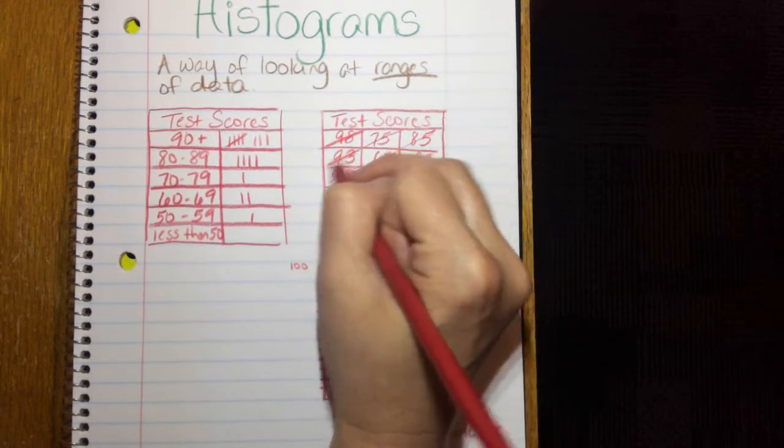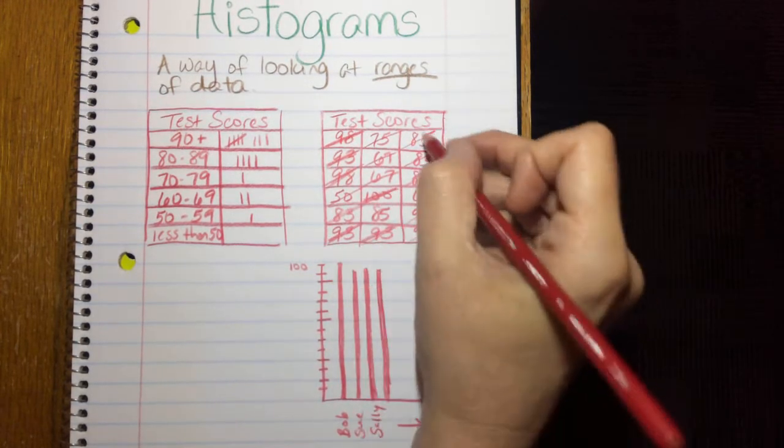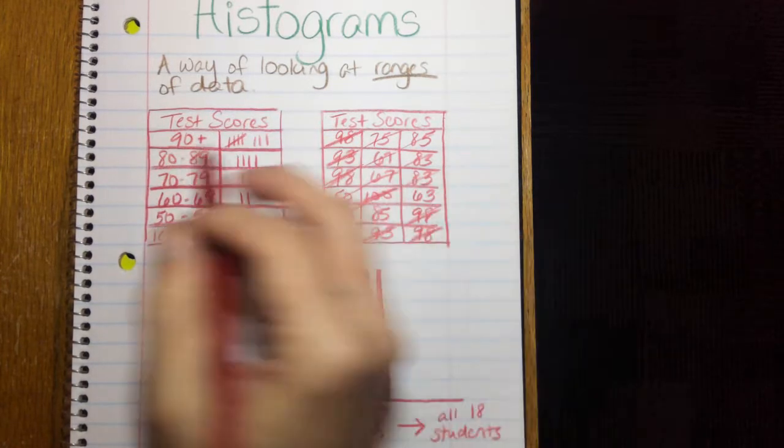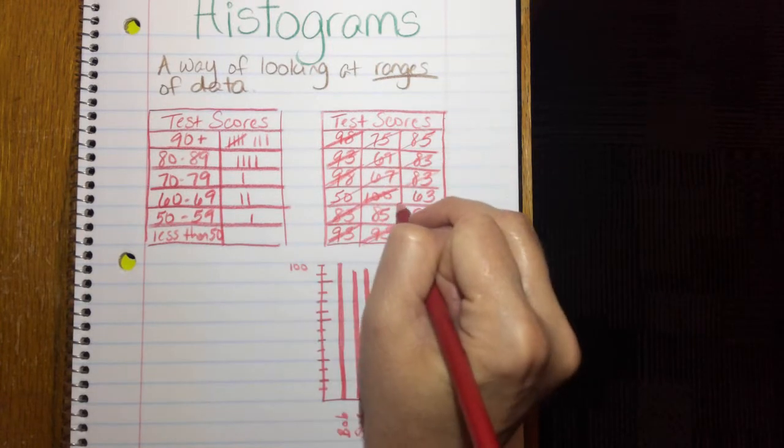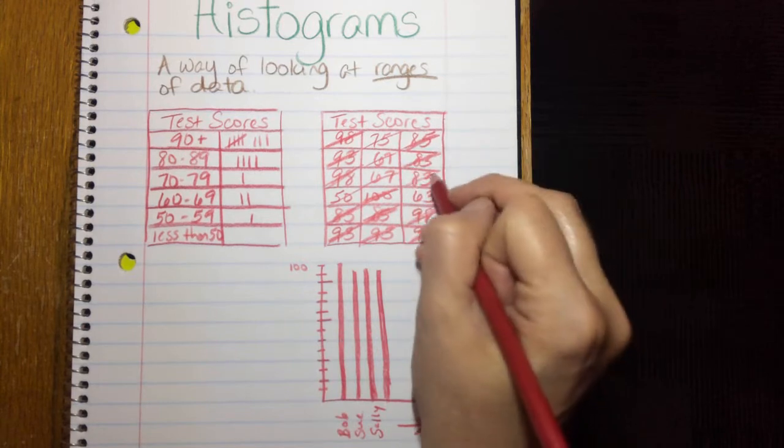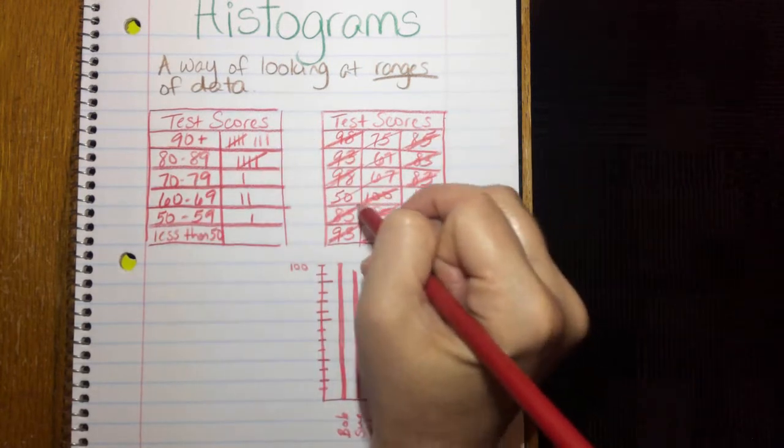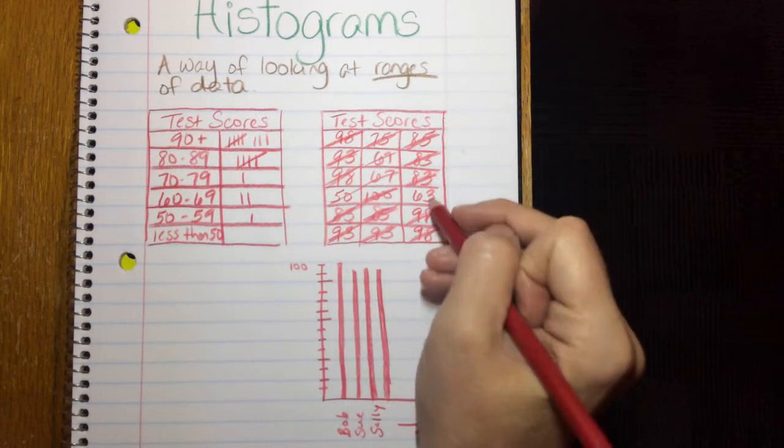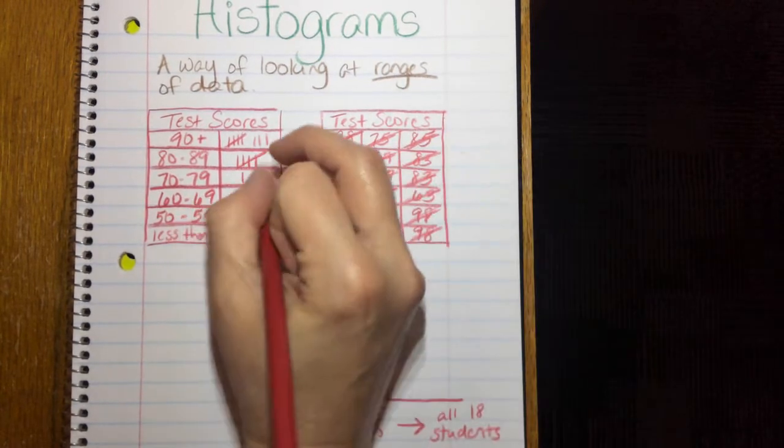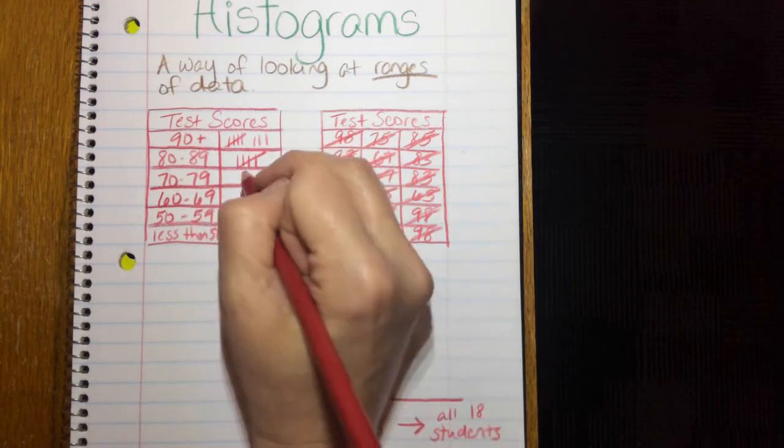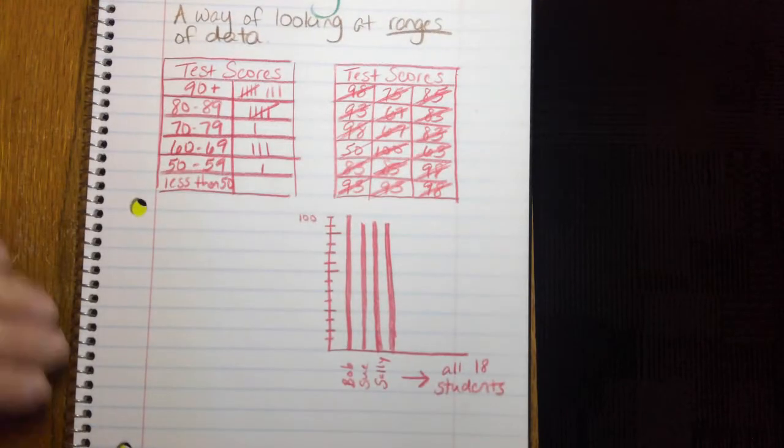So 90 plus, 1, 2, 3, 4, 5, 6, 7, 8. Between 80 and 89, 1, 2, 3, 4, 5, 6, 7, 8.